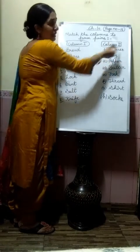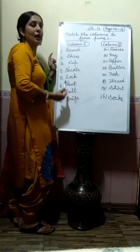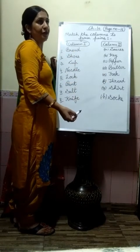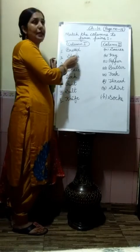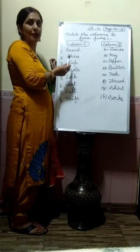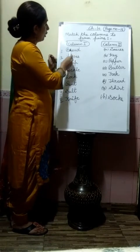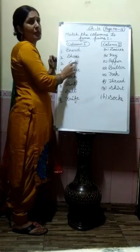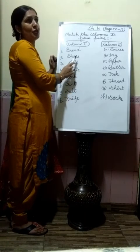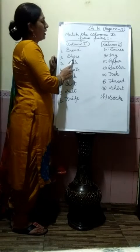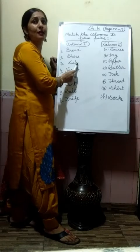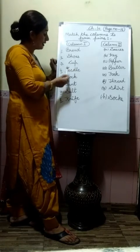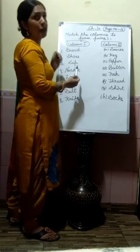Eight words are given in column one and eight words are given in column two. First I will read column one so that you will be able to read and understand their meaning. First word is bread — B-R-E-A-D — bread. Everybody knows bread. Second is shoes — S-H-O-E-S — shoes. Third is cup — C-U-P — cup, which is used to drink tea or coffee.